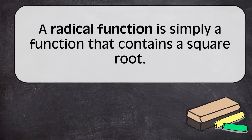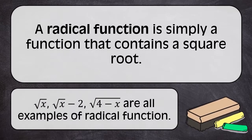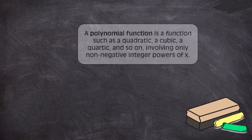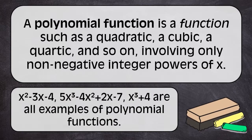A radical function is simply a function that contains a square root. Square root of x, square root of x minus 2, square root of 4 minus x are all examples of radical function. A polynomial function is a function such as a quadratic, a cubic, a quartic, and so on, involving only non-negative integer powers of x. x squared minus 3x minus 4, 5x cubed minus 4x squared plus 2x minus 7, and x cubed plus 4 are all examples of polynomial functions.